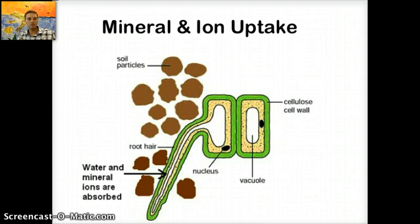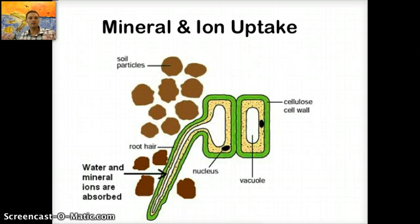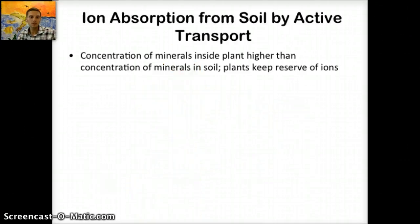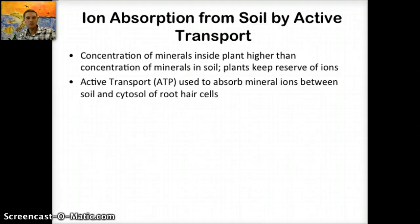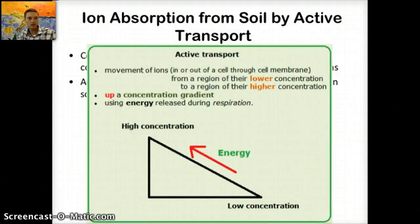Plants also have a unique mutualistic relationship with hyphae. Because ions move very slowly through soil, this thread-like hyphae grows in soil to absorb those mineral ions and supplies them to the roots of the plant. The fungus receives sugars and other nutrients from the plant in exchange, which is another example of a mutualistic relationship. The concentration of minerals inside the plant is higher than in the soil, and plants use ATP to absorb more ions from the soil into the root hairs via active transport — movement from low concentration to high concentration requiring energy.